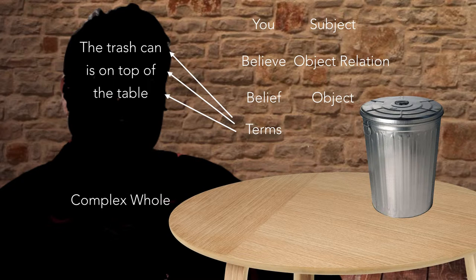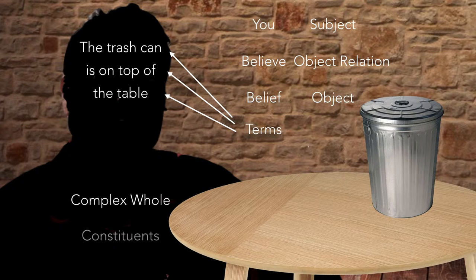These three things together — the subject, the object relation, and the object — they constitute a complex whole. 'Complex whole' doesn't mean that it's complicated, although this theory might be a little unnecessarily complicated. The idea is it's complex as opposed to simple. Complex things have parts; simple things don't. So this complex whole has parts, and the parts are constituents: you, the belief, and the believing — the subject, the object, and the relation — they all form a complex whole.